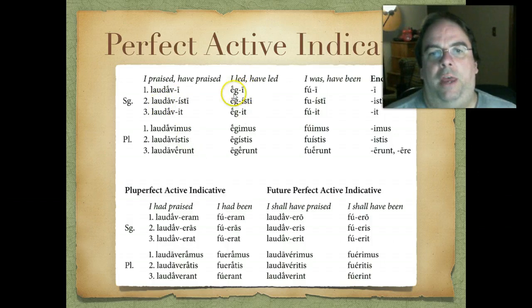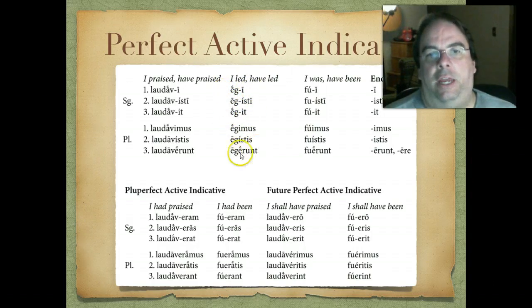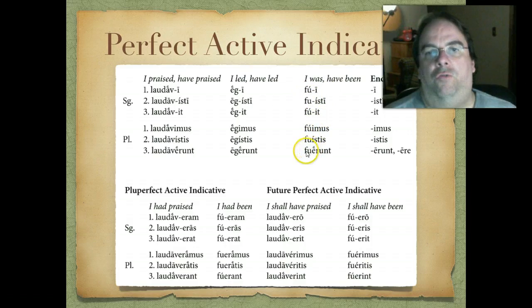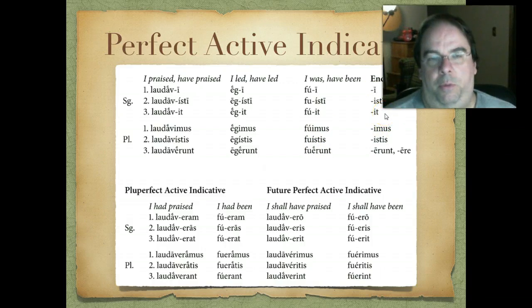Looking at the model verb agō, agere, ēgī, āctum, we would have: ēgī, ēgistī, ēgit, ēgimus, ēgistis, ēgērunt. Again, the good news is it's absolutely regular. Even for irregular verbs like 'to be' — sum, esse, fuī, futūrum — we have: fuī, fuistī, fuit, fuimus, fuistis, fuērunt. So again, just taking these endings and sticking them on the perfect active stem. Very, very simple.